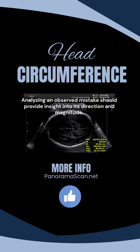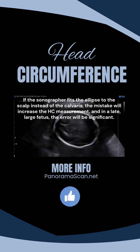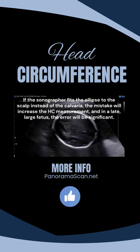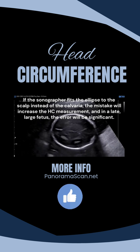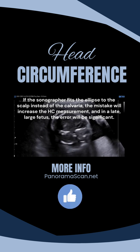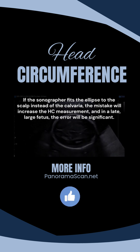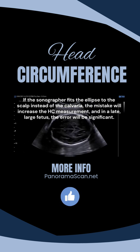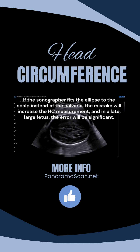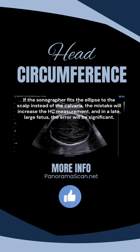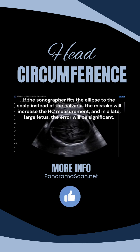Analyzing an observed mistake should provide insight into its direction and magnitude. If the sonographer fits the ellipse to the scalp instead of the calvaria, the mistake will increase the HC measurement — that is the direction of the error. In a late, large fetus, the error will be significant, and this will be the magnitude of the error. In a young fetus, the magnitude of the error will be small.